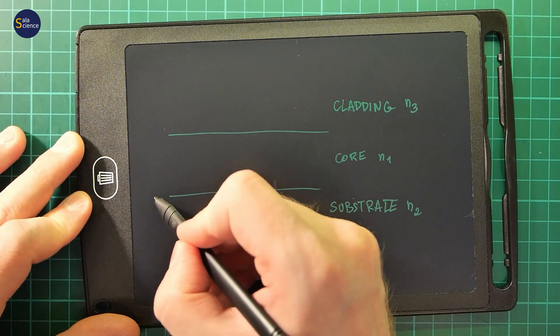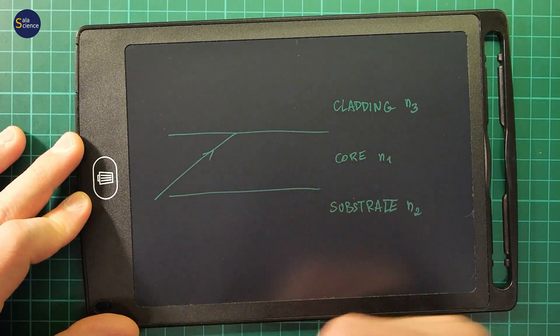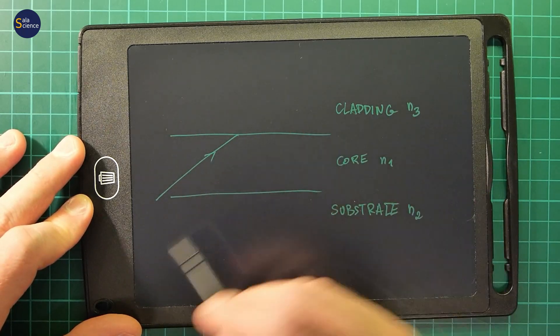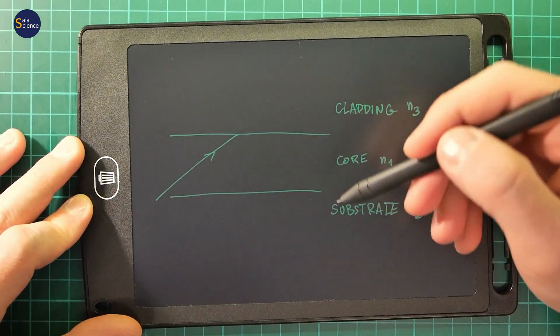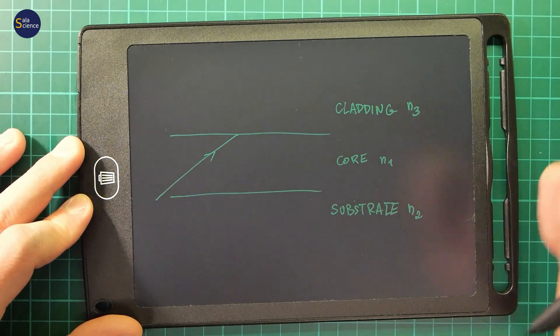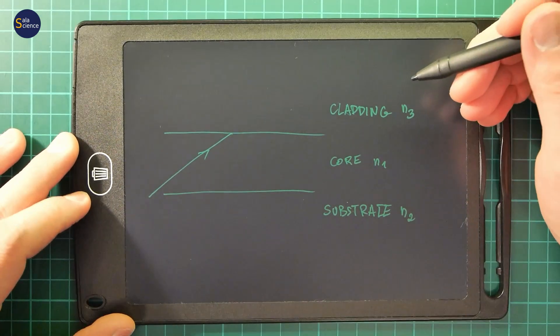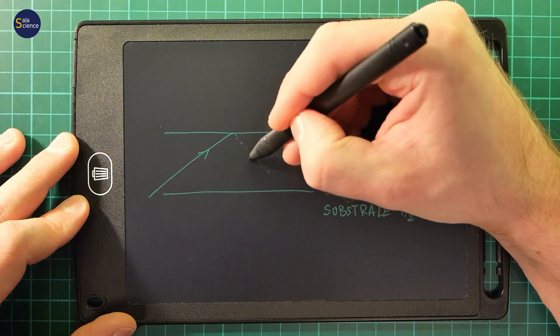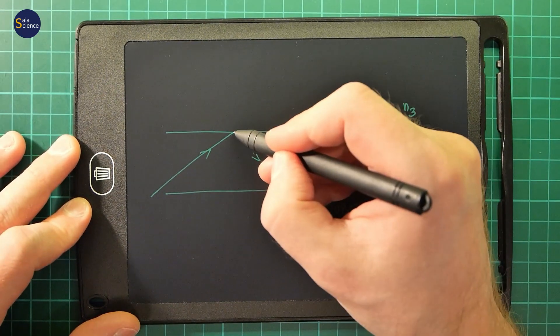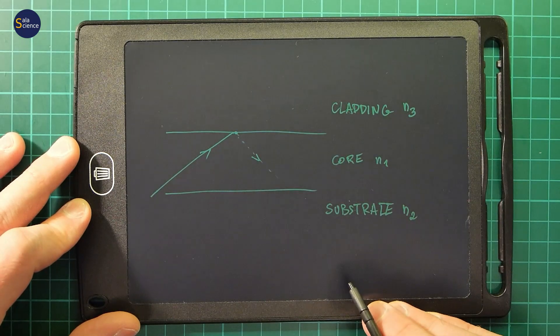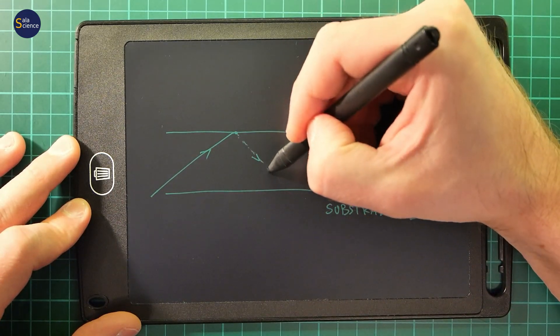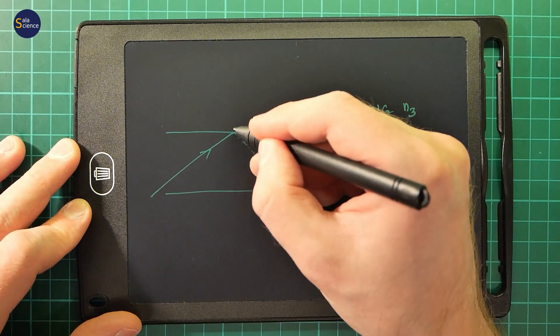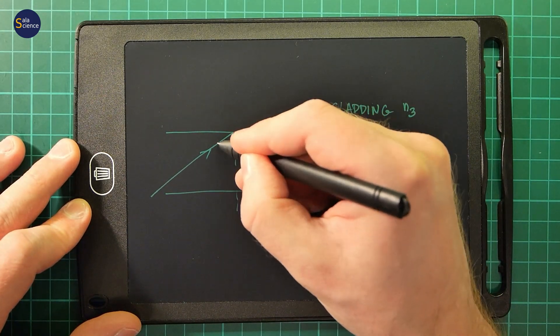And we have a wave, a beam, which falls at the boundary between the core and the cladding and then between the core and the substrate. In geometrical optics, this reflection occurs at the boundary. So we have a reflected beam here at some angle.